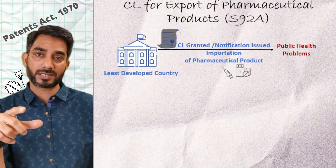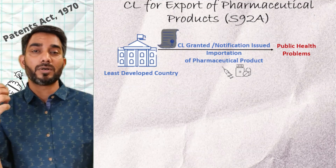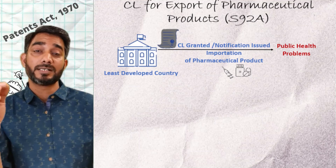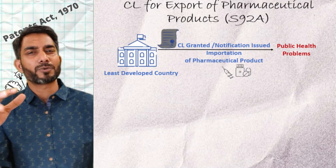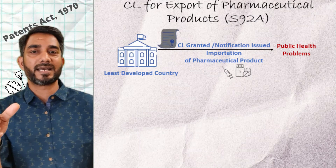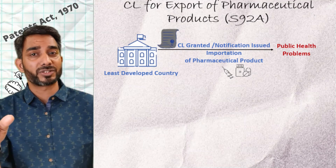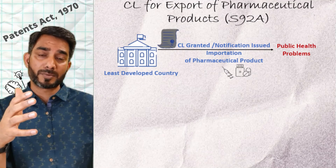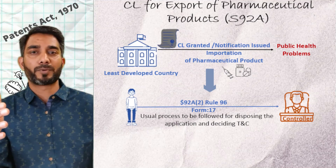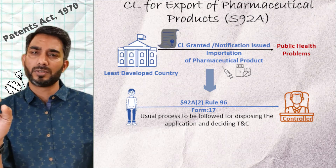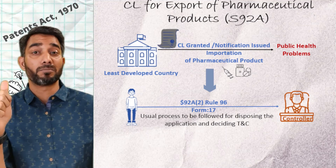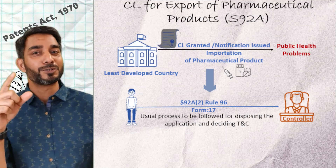Another use case is where another country suffering from public health problems decides to grant a compulsory license for a pharmaceutical product, or officially notifies that importation of such a pharmaceutical product from India is allowed. This applies to least developed countries which may not have a suitable manufacturing environment for pharmaceutical products, or may not have the capacity to meet public requirements. In such cases, a person may approach the controller under Section 92A.2, Rule 96, using Form 17, for obtaining a compulsory license for manufacturing and exporting the pharmaceutical product to such a country.